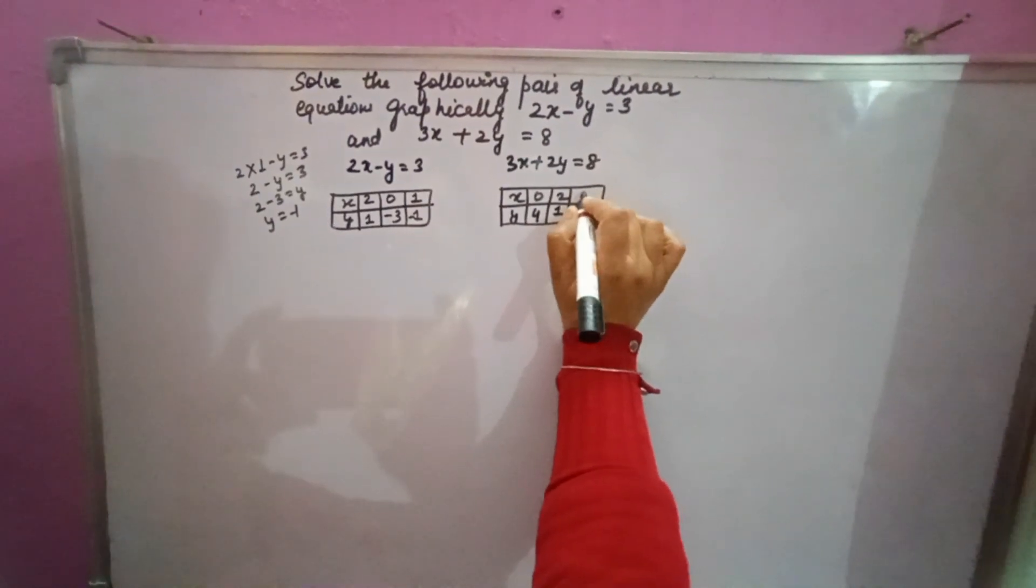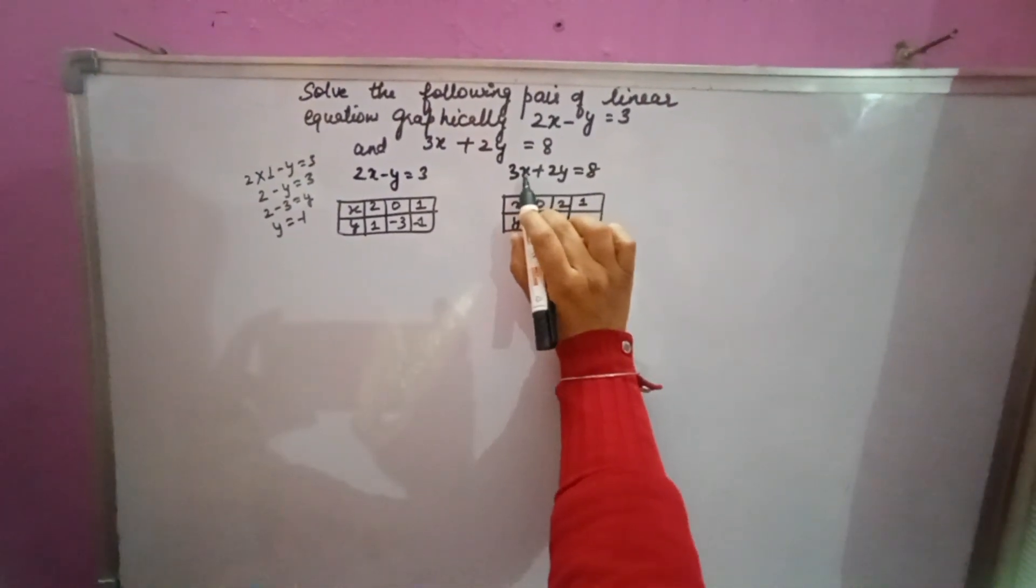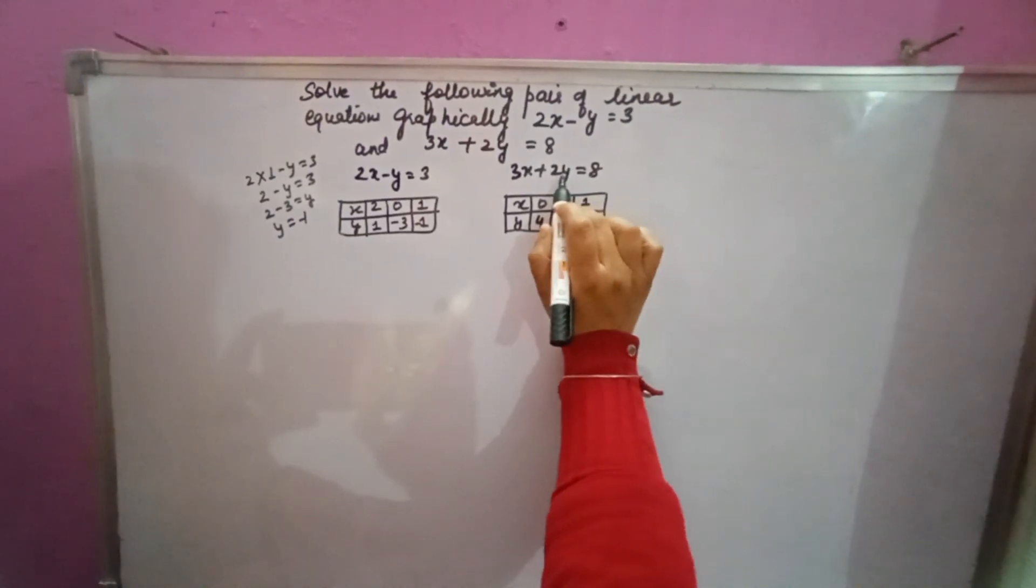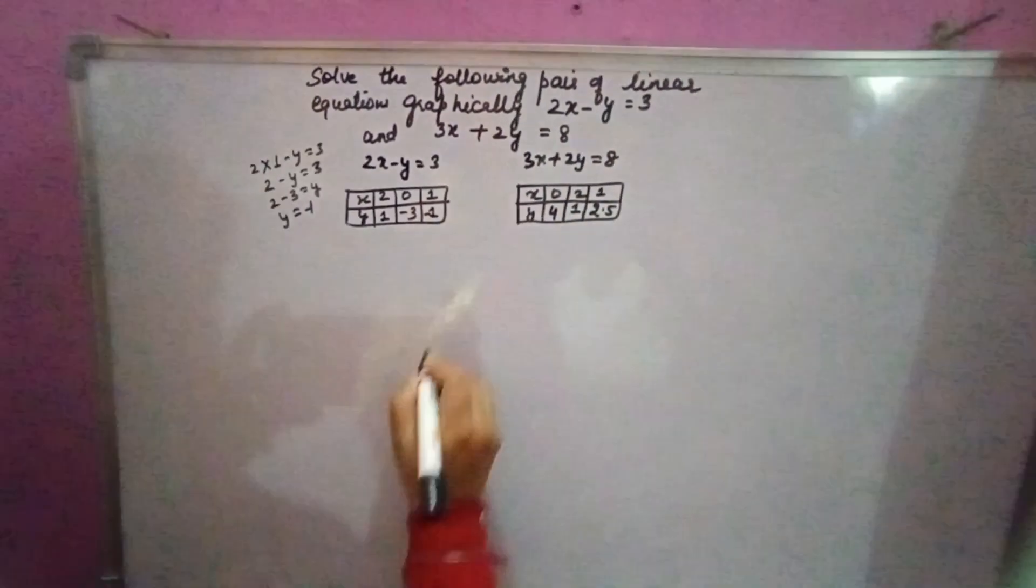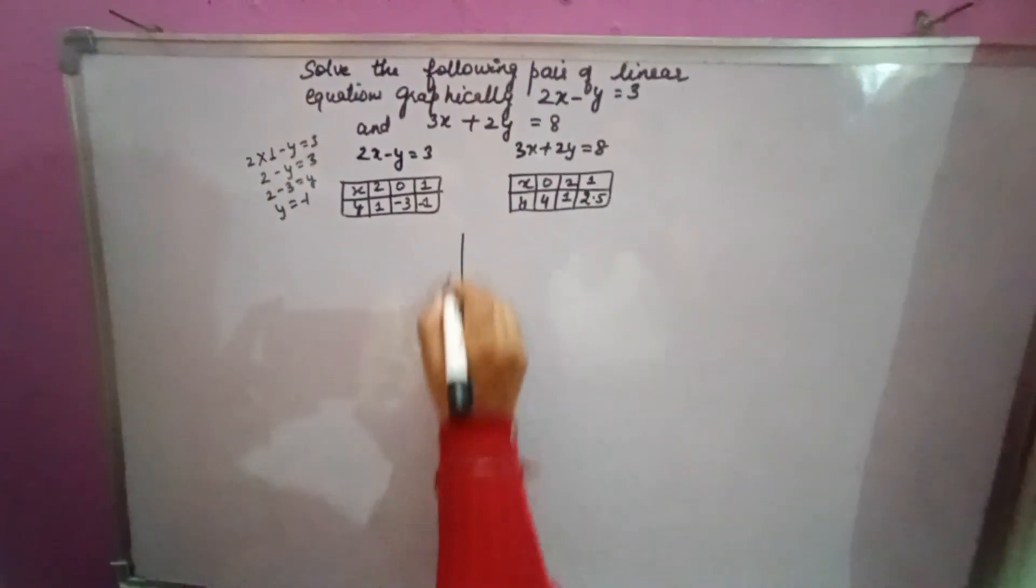Now any other value. Suppose x you are taking 1. 3 times 1 is 3. 8 minus 3 is 5. y will come 5 over 2, that is 2.5. Now you have to plot the graph on the graph paper.